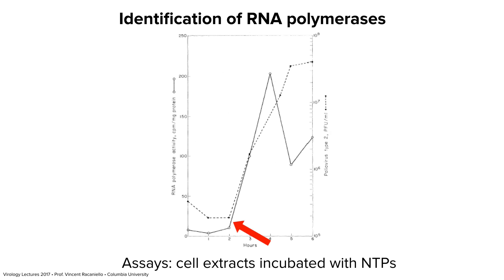Right after infection, at one and two hours, there's an eclipse period where you don't see any infectivity because the genome has uncoated. Between two and three hours you see production of infectious particles, which peaks within five or six hours — a typical one-step growth curve. Paralleling the production of virus is the production of RNA. So this RNA virus genome is somehow being replicated.